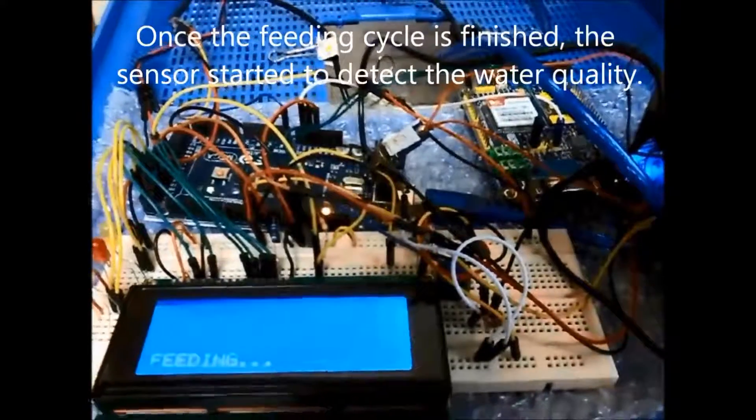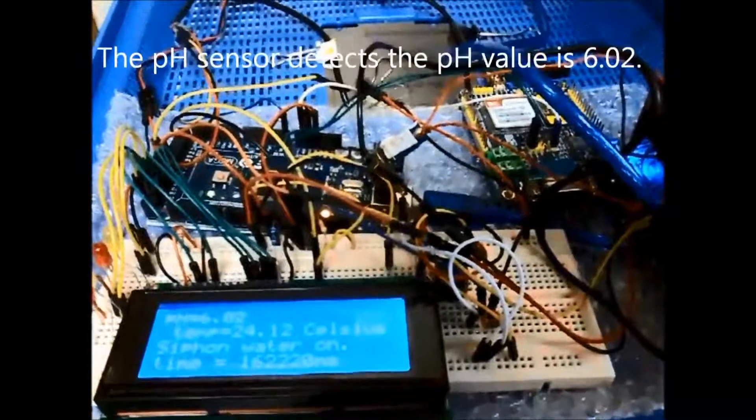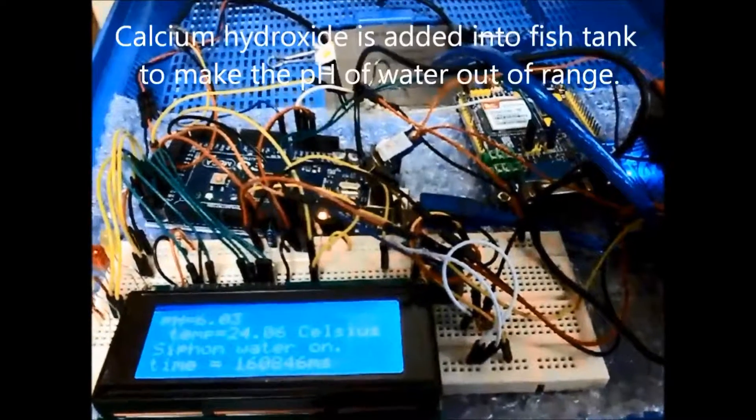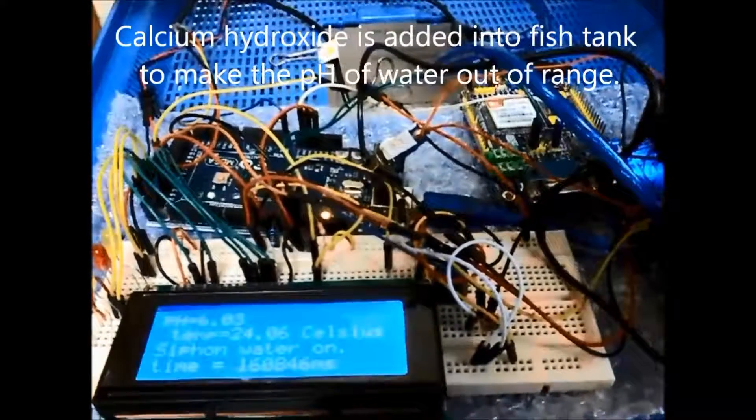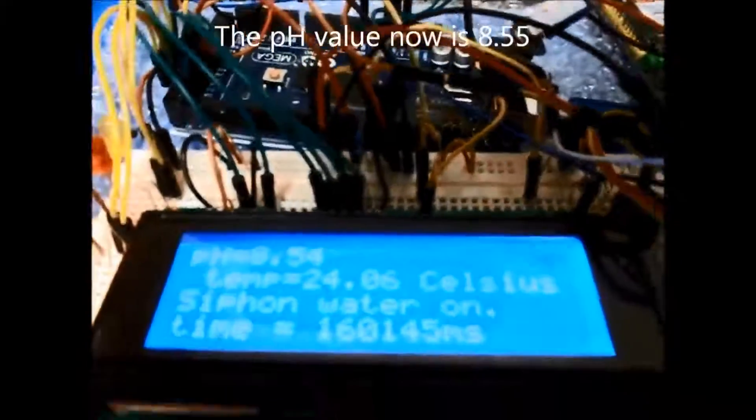Once the feeding cycle is finished, the sensor starts to detect the water quality. The pH sensor detects the pH value is 6.02. Calcium hydroxide is added into the fish tank to make the pH of water out of range. The pH value now is 8.55.